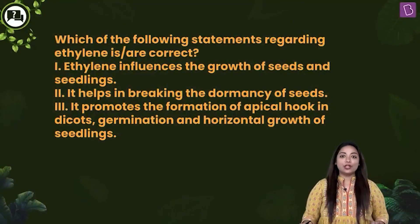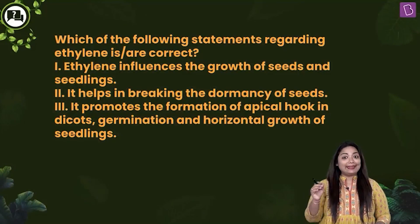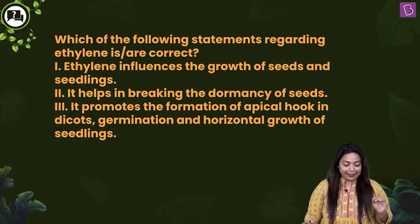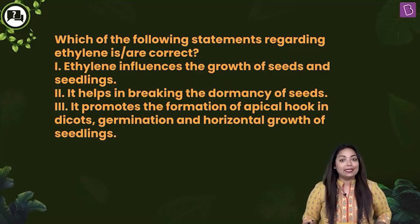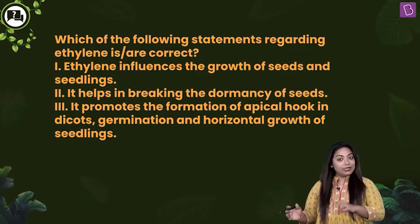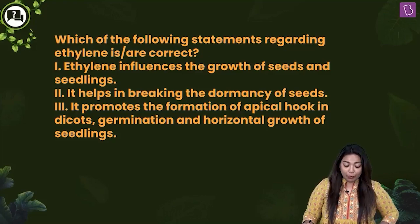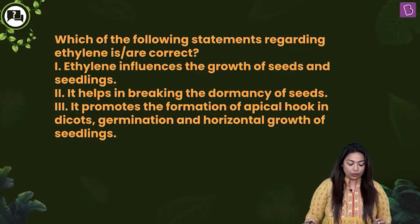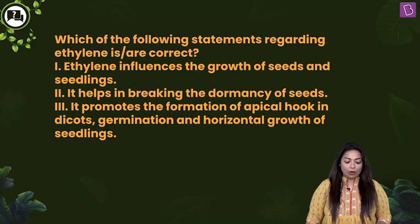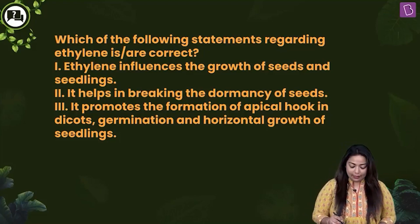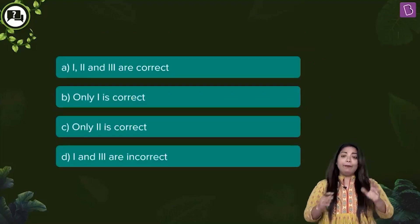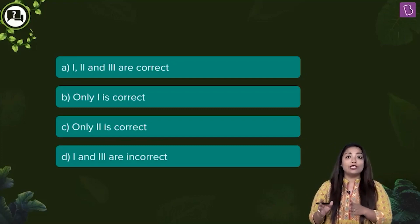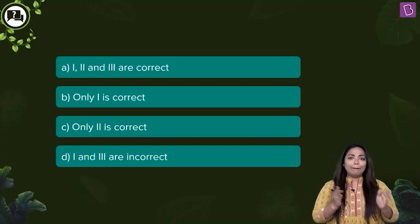Time to pick the correct statements. Which of the following statements regarding Ethylene is or are correct? One: Ethylene influences the growth of seeds and seedlings. Two: it helps in breaking the dormancy of seeds. Three: it promotes the formation of apical hook in dicots, germination and horizontal growth in seedlings. Before we go into the options, take a look at this flowchart and make a note of it.